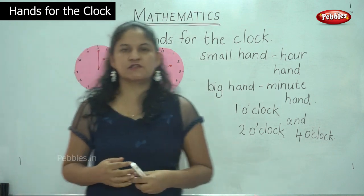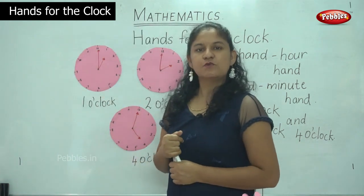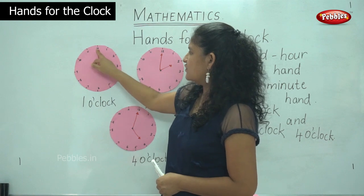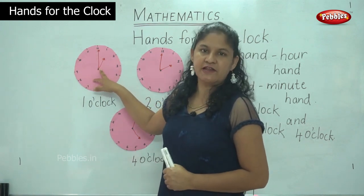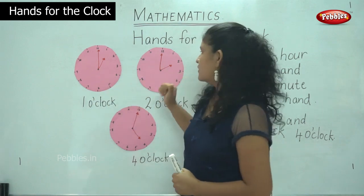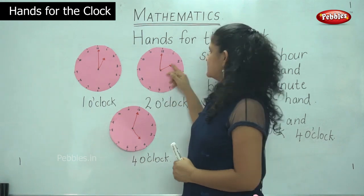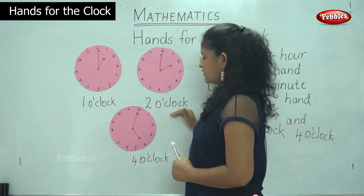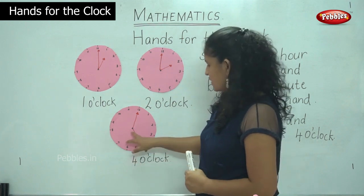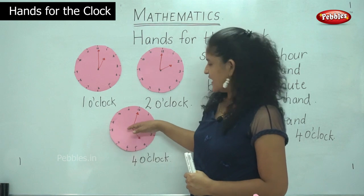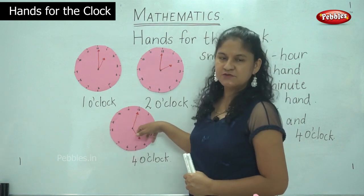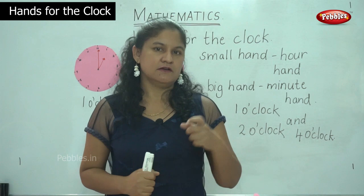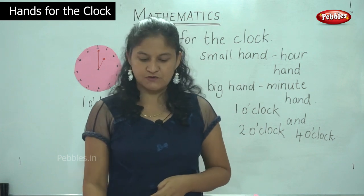I hope you understood this concept of drawing the hands of the clock. When it is 1 o'clock, the small hand or the hour hand points towards 1 and the big hand or the minute hand points towards 12. To mark 2 o'clock, the small hand points towards 2 and the minute hand points towards 12. When it is 4 o'clock, the hour hand points towards 4 and the minute hand points towards 12. These are the three different timings we have done using a model of the clock.